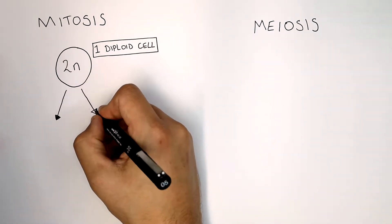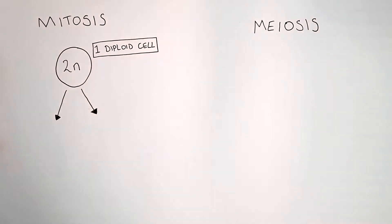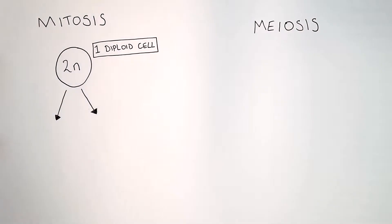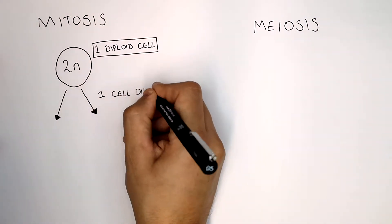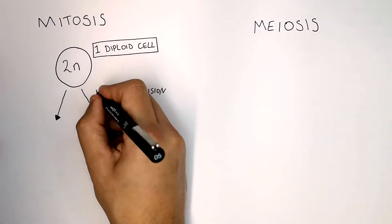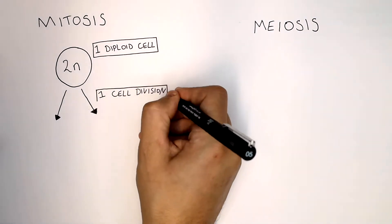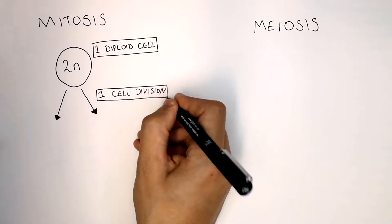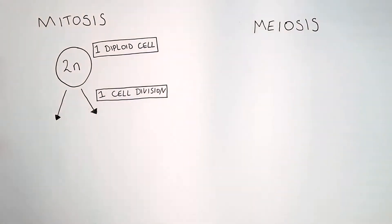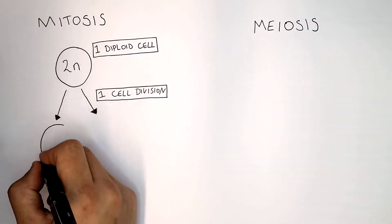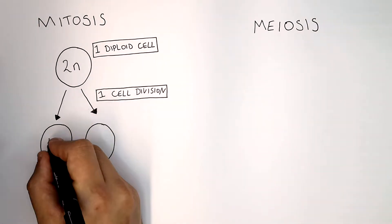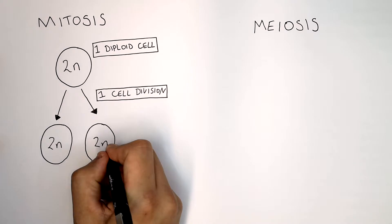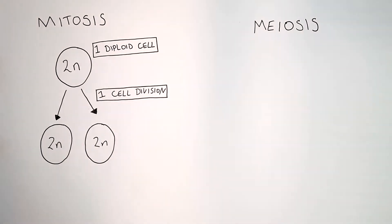This body cell undergoes one cell division, whereby the cell divides once into two cells. So two cells are formed, and they are two diploid body cells.